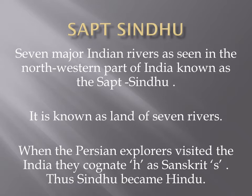We start from Sapta Sindhu. Sapta Sindhu means Sapta (seven) and Sindhu (rivers). There are seven major rivers in the north-western part of India, known as Sapta Sindhu, also called the land of seven rivers. When foreign explorers visited India, they cognated the Sanskrit word Sindhu; as they pronounced it, Sindhu became Hindu.